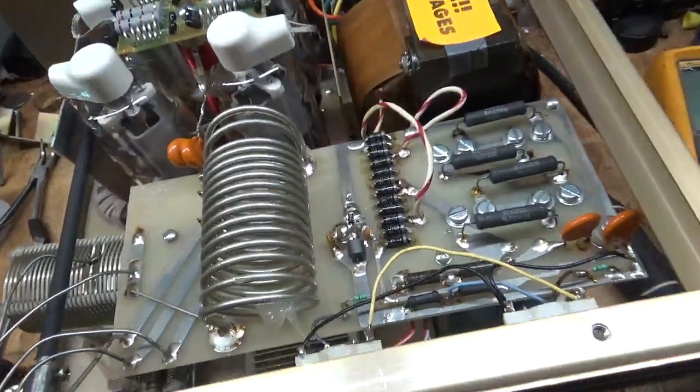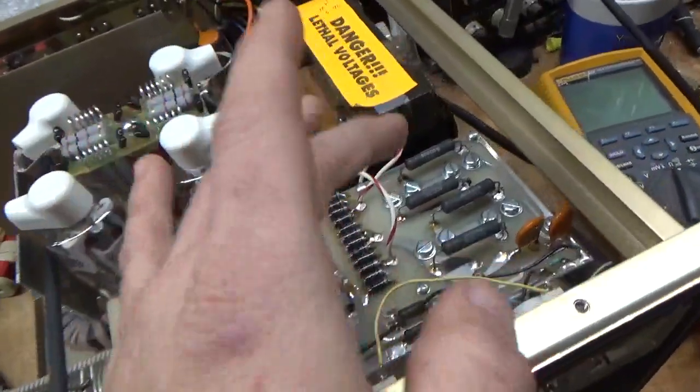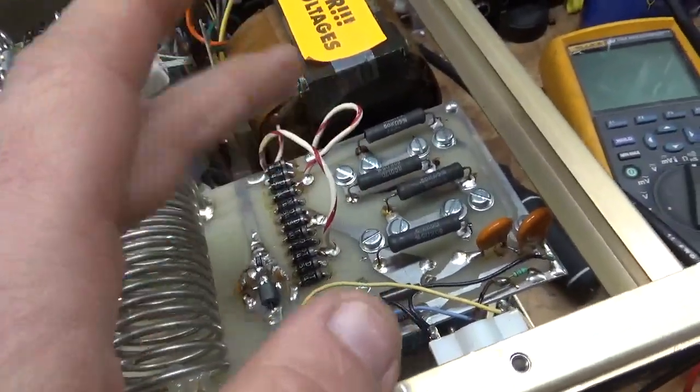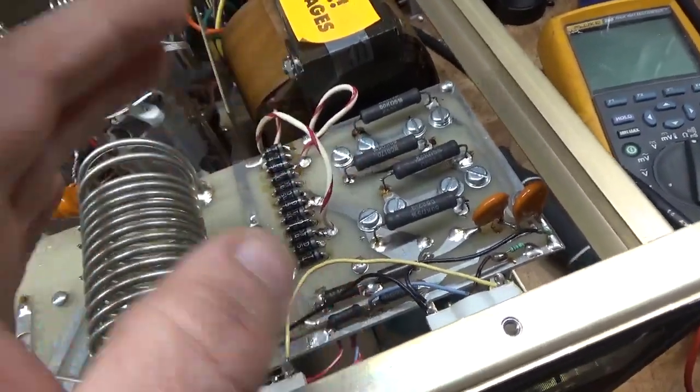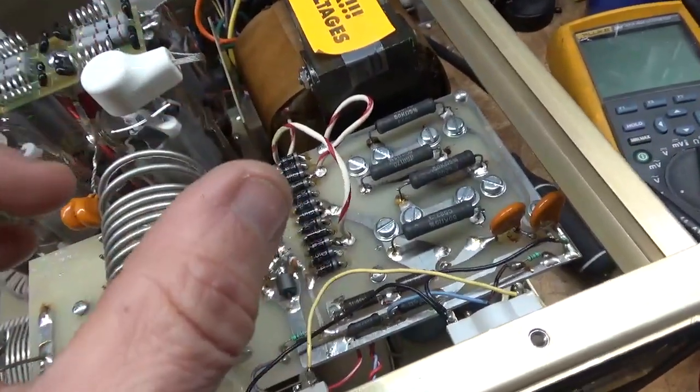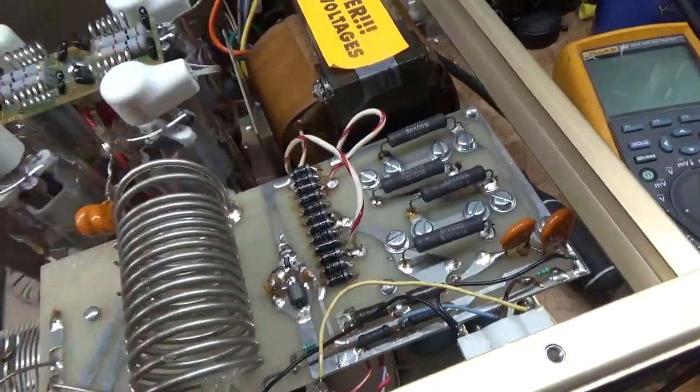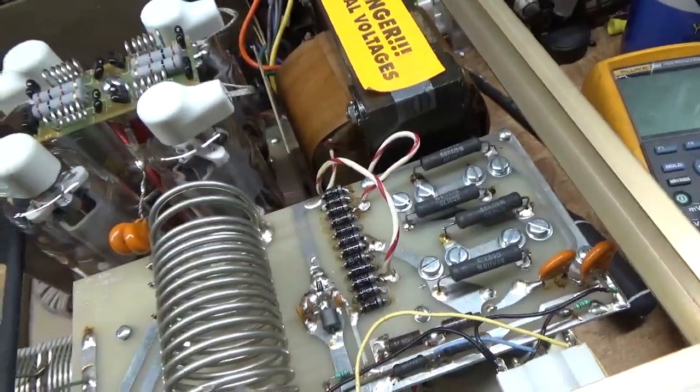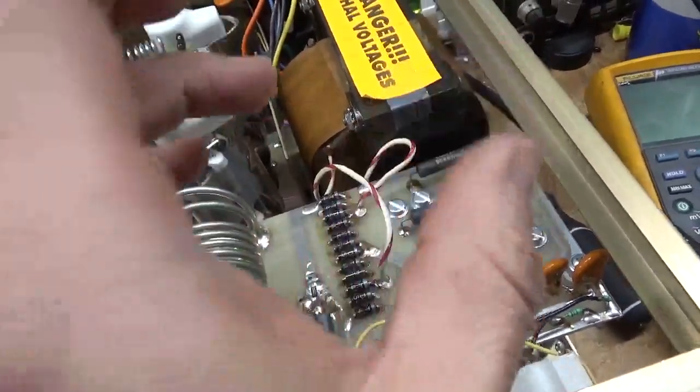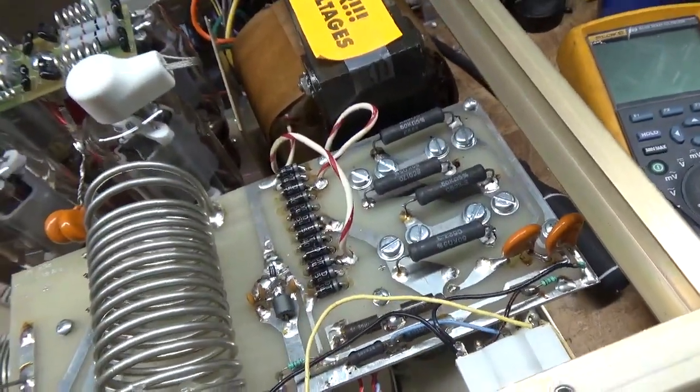Filter caps are good. I want to make a note of something. Ameritron used to use pink resistors. They don't last as long as these black resistors here. On the last one I did, they had sent me pink ones because they ran out of the black ones. So I ended up pulling those pink ones out and I purchased new Ohmite ones, and it's even better than these black ones. So I took those out, replaced them.